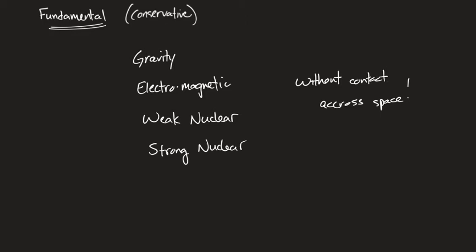We know a lot about how these things behave but nothing about why. Every one of these forces, we have information about it. We know that gravity acts on all objects that have gravitational mass. Each one of these forces acts on a different intrinsic property of matter. Intrinsic means to be a part of the nature of something.